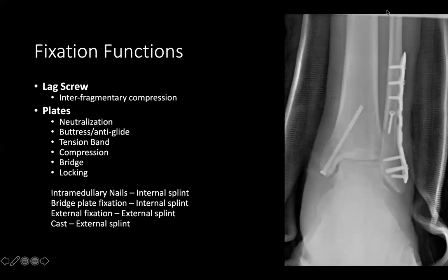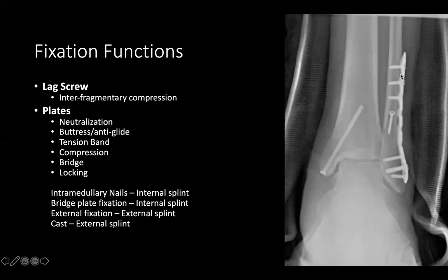Know how to explain types of plates quickly — students are asked at multiple externship sites to list them and describe what they do, as well as specific fractures each is used for. On the fibular fracture, some may call this an anti-glide plate, which is usually on the posterior aspect of the fibula — but this lateral plate is a neutralization plate.